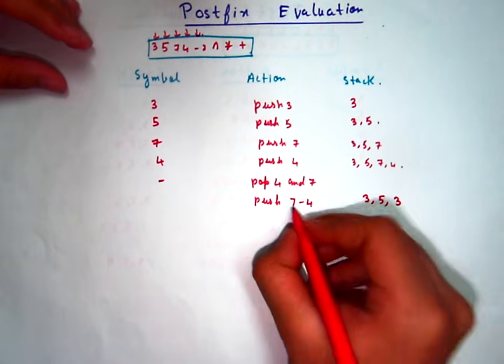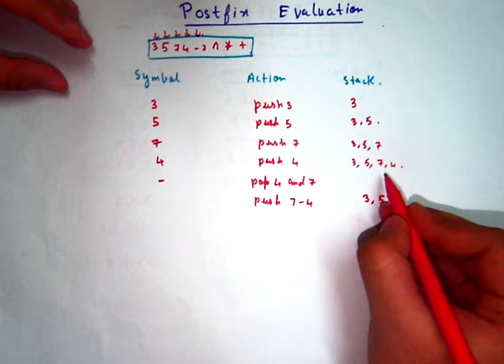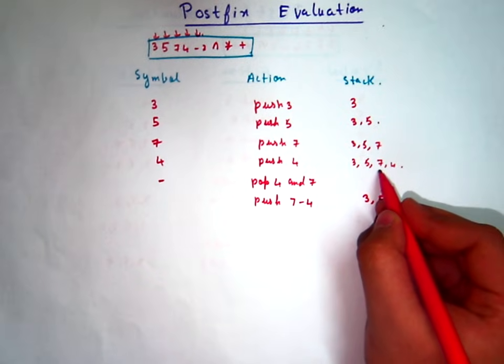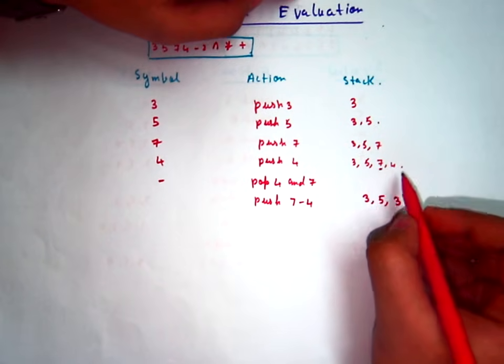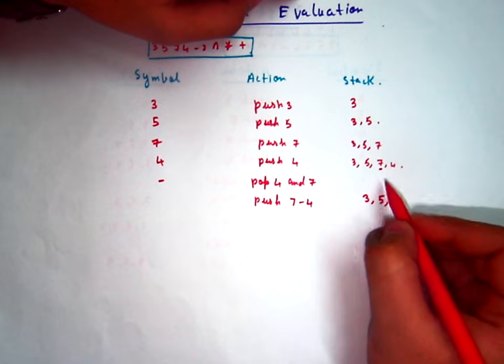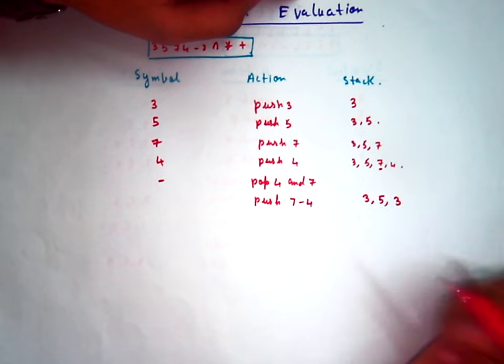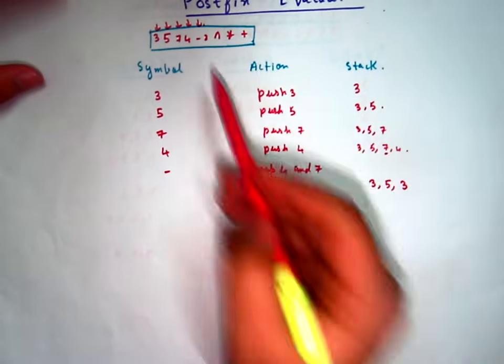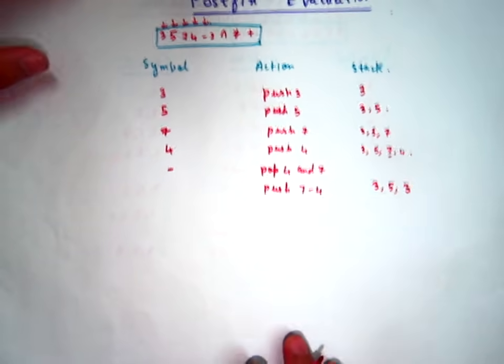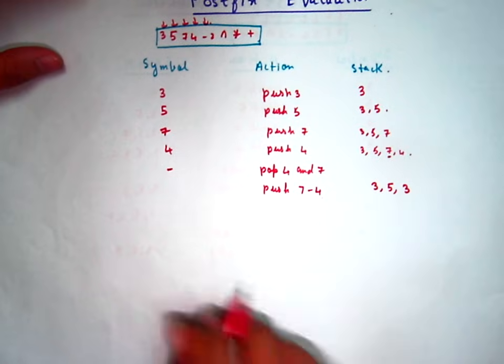Okay, remember that whichever operand was in the beginning, that will come first, then the operator, then the second operand. This will be more clear when we do further calculations. Please give attention to that.